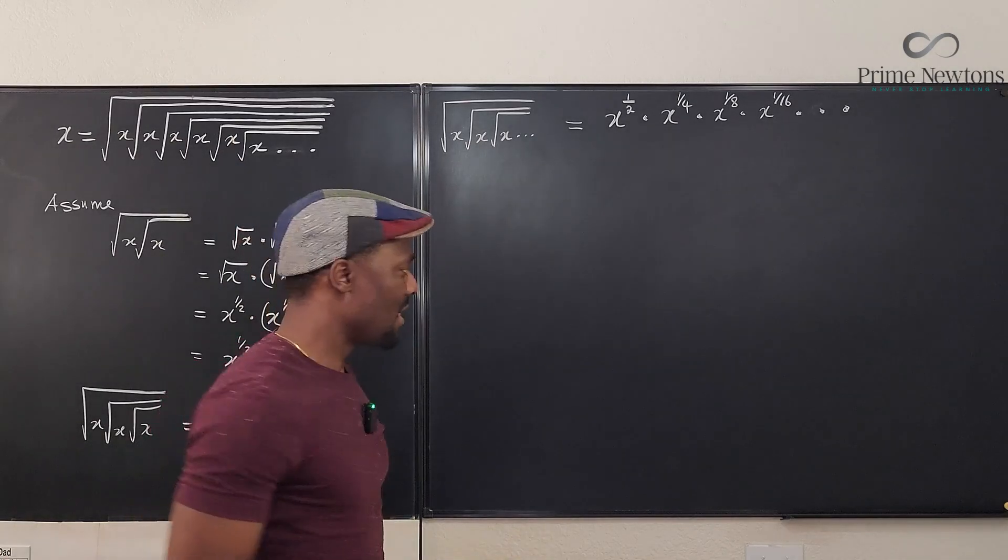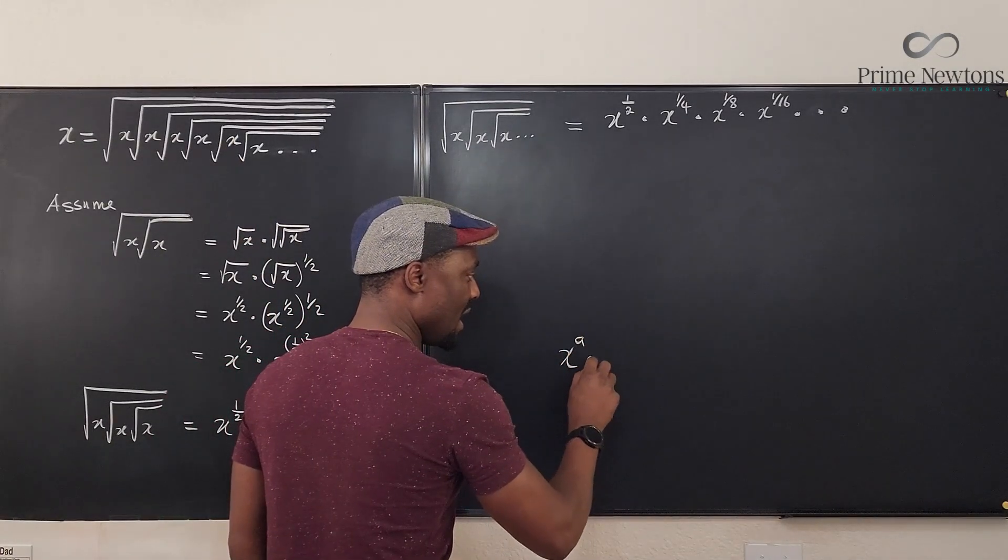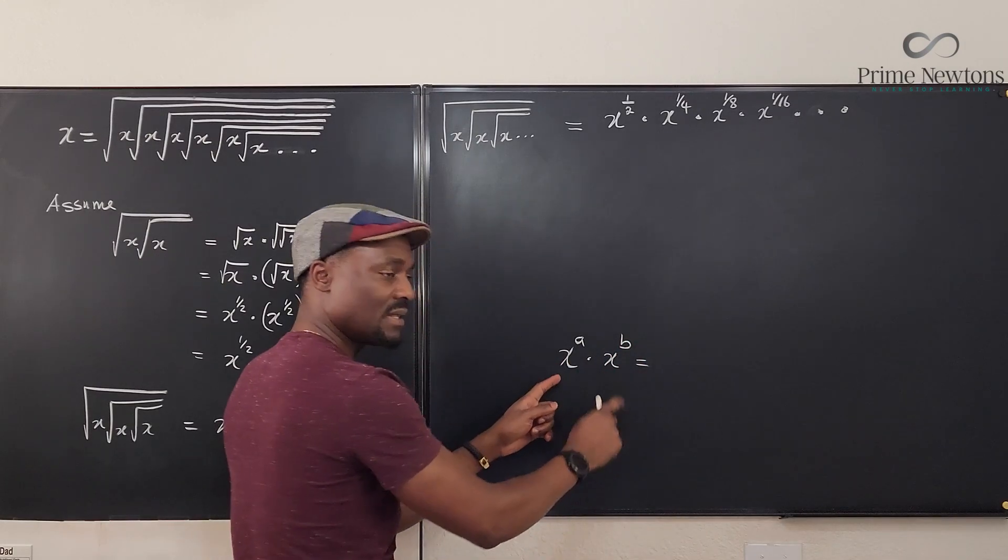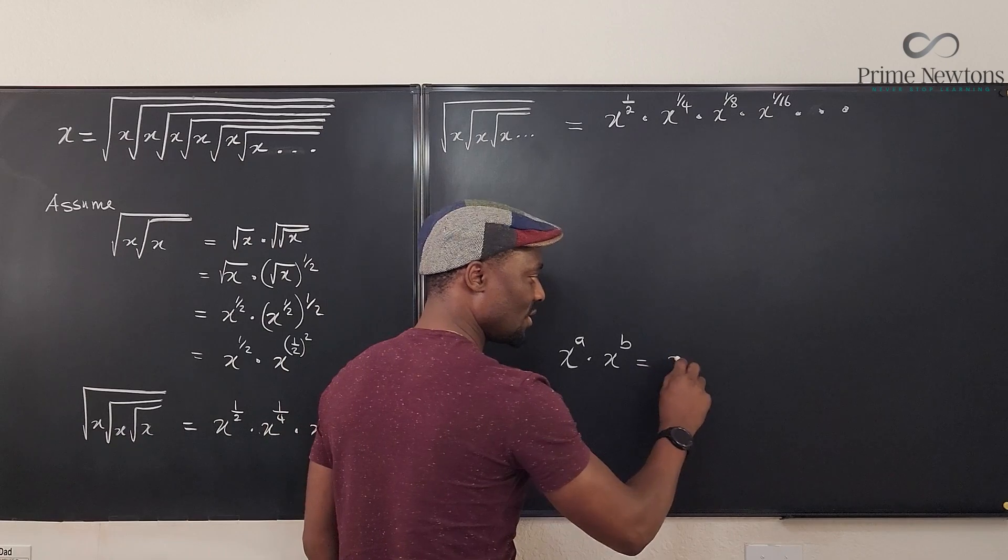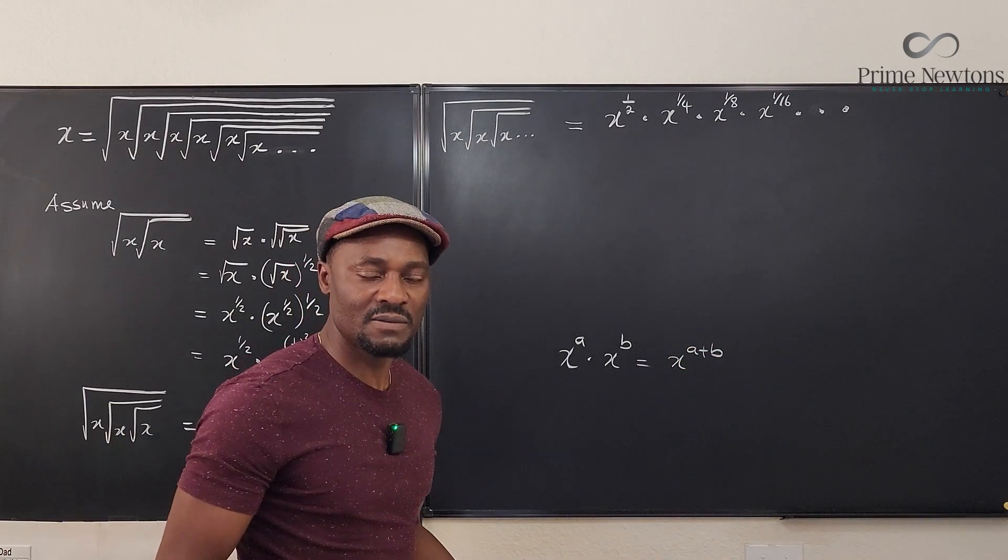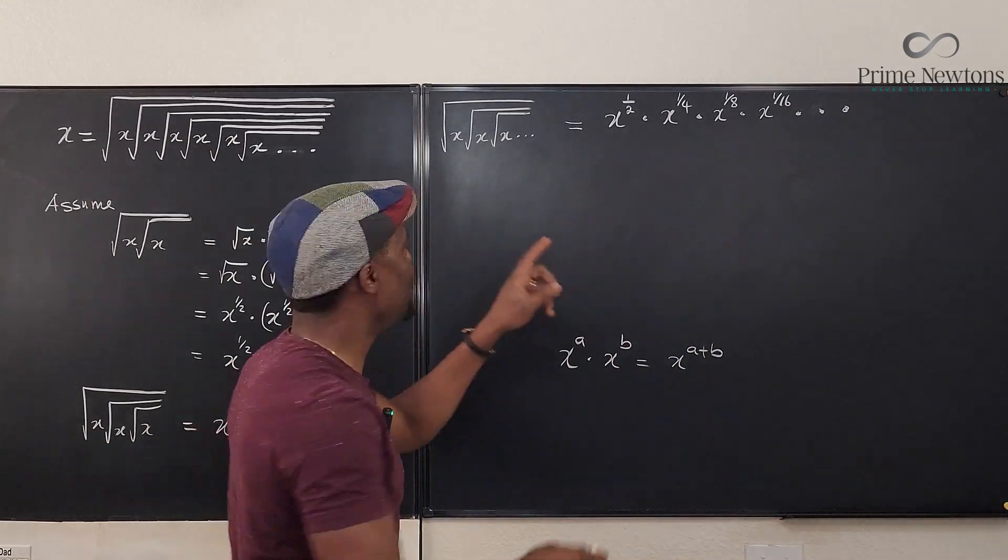Well, we know that x raised to power a times x raised to power b—if you multiply two things and the base is the same, then you just say it's x raised to power a plus b. And even if there are one million of them, you just keep adding all the exponents. That's what we do here.